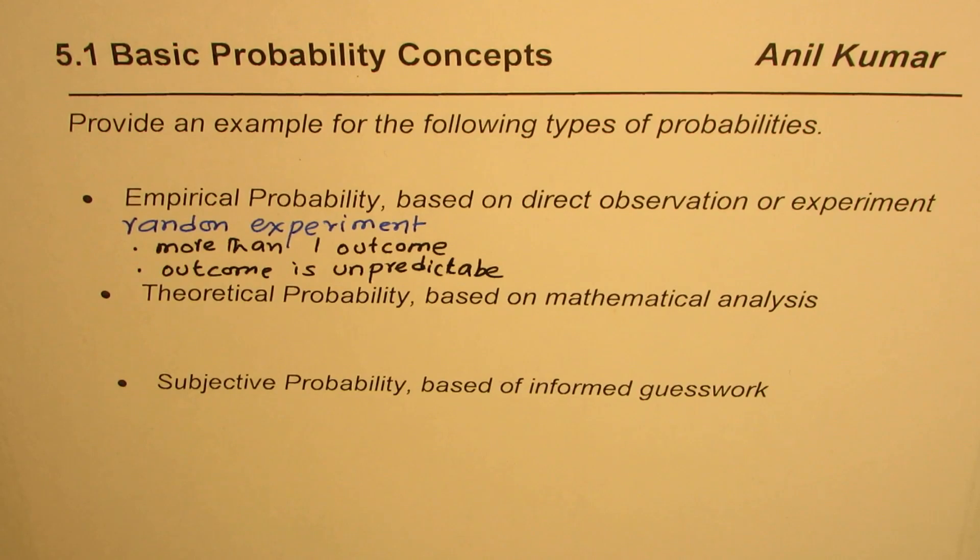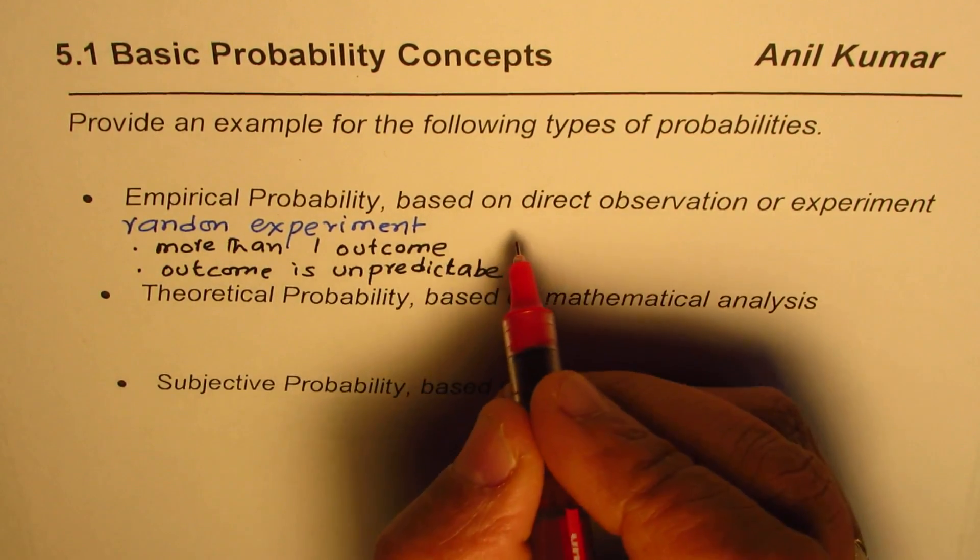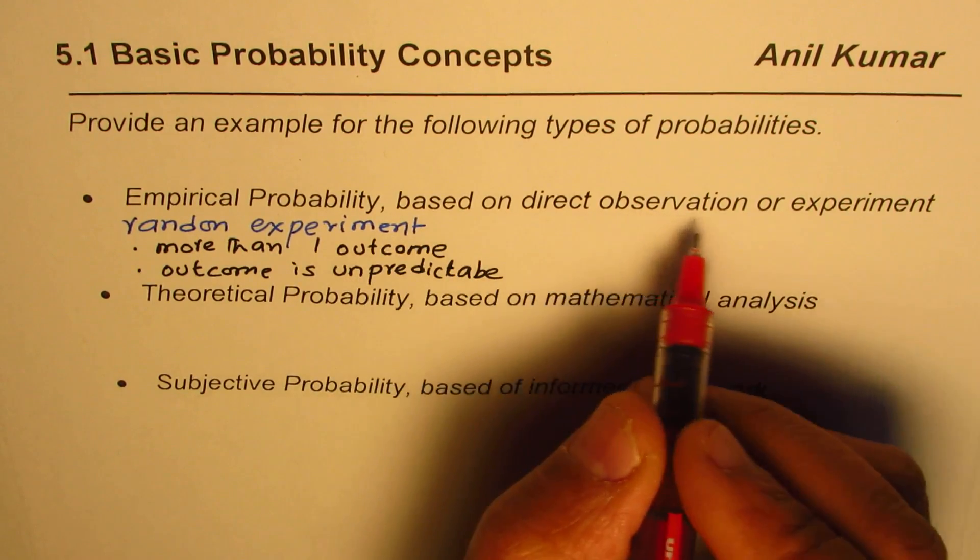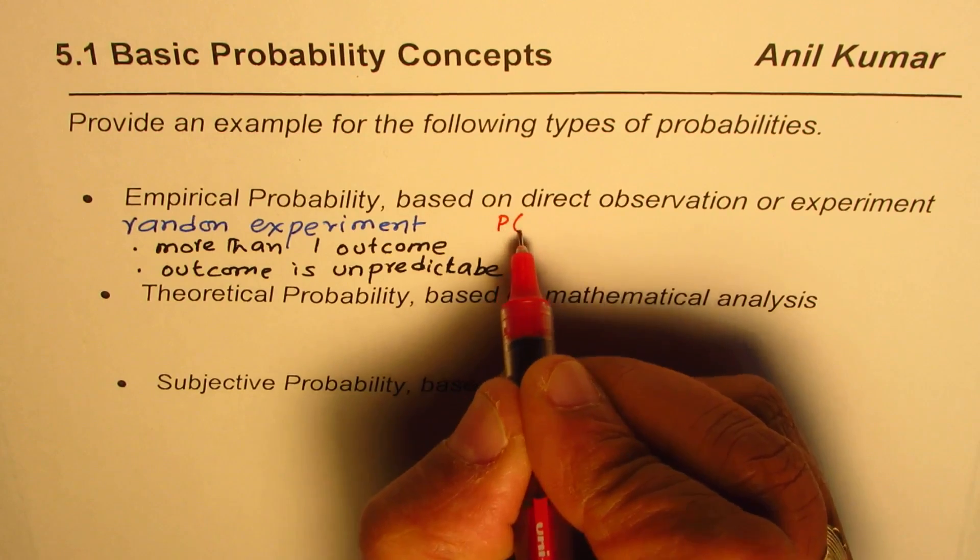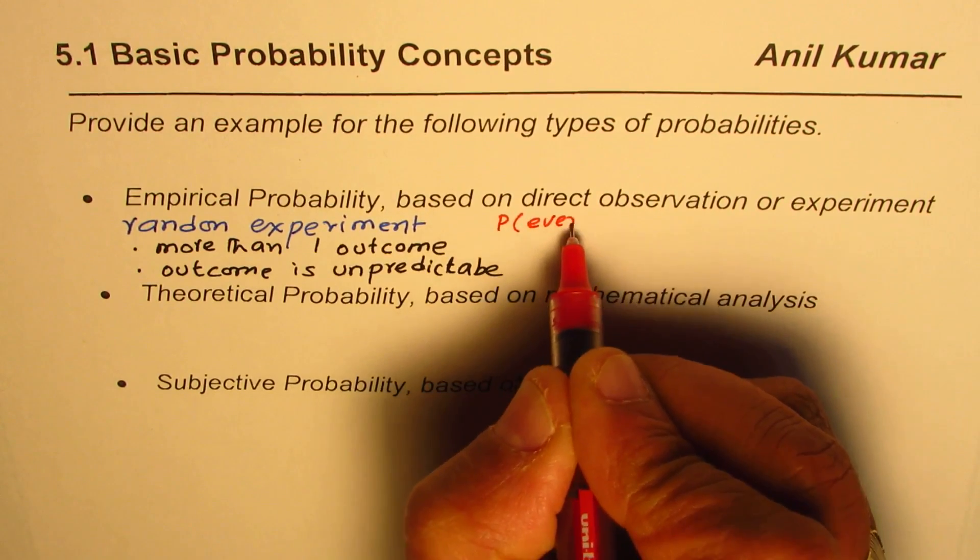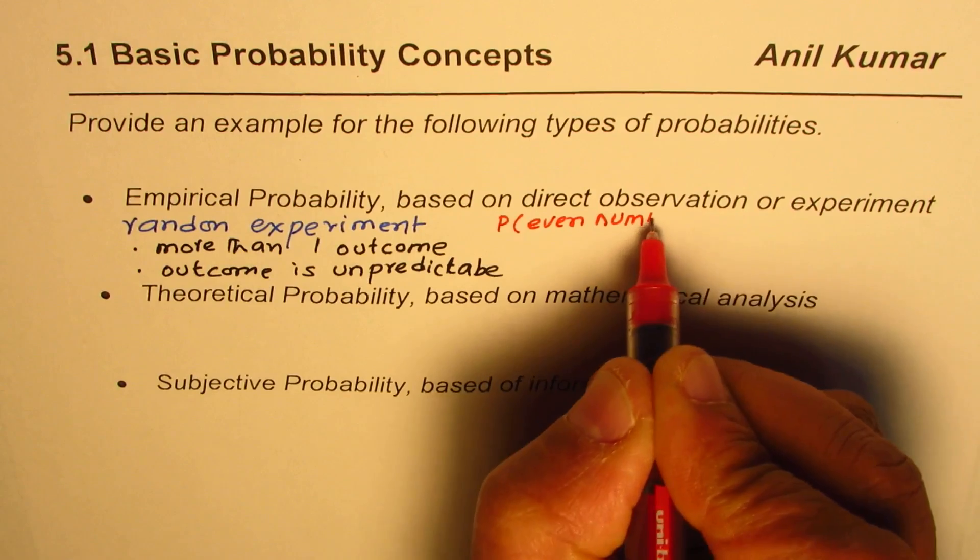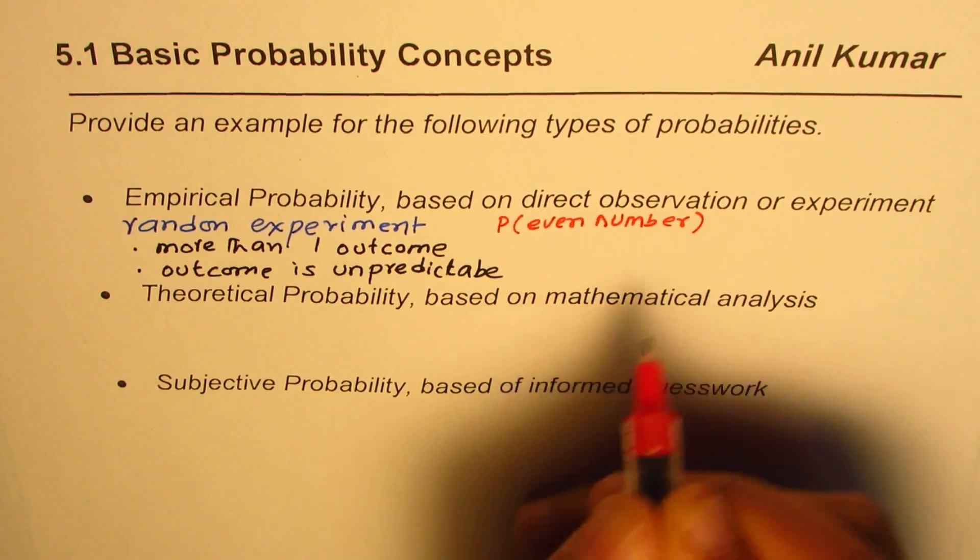So let's make an experiment that is let's take up the case of rolling a die. So when we roll a die we could get numbers from one to six and let's find experimental probability or empirical probability for rolling even number. Okay so let that be the experiment.